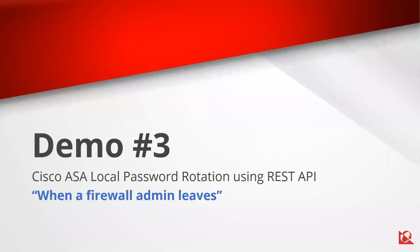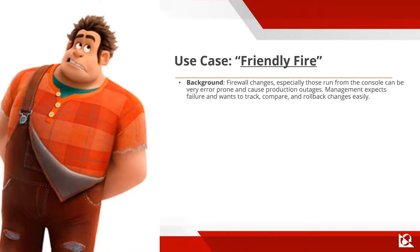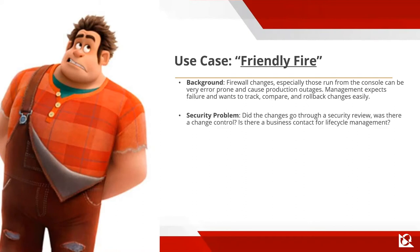Let's talk about friendly fire. When you're programming and running REST APIs, you're going to want to back stuff up, because if you fat-finger something or do something wrong, having that backup function built into everything you do is a great idea. Firewall changes — especially those run from the console — can be very error-prone and cause production outages. Management expects failure in the DevOps environment; you just have to be able to recover quickly and track, compare, and roll back changes easily.